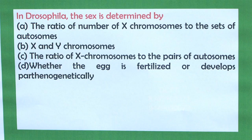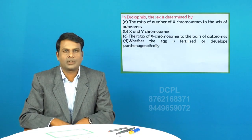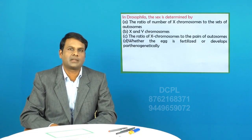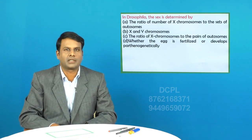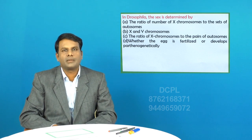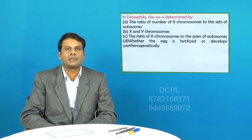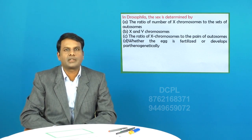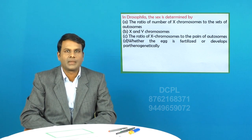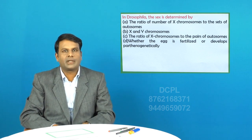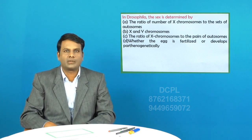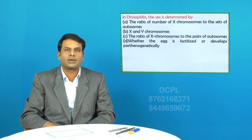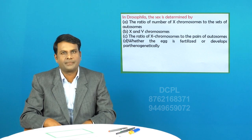Students, let us take another question on chromosomal basis of sex determination. The chromosomal basis of sex determination was established by cytological studies on insects. After Henking discovered the X chromosome, he called it the X body, and then the chromosomal basis of sex determination was established.